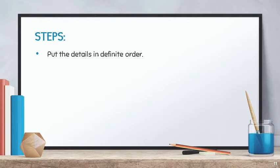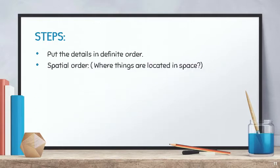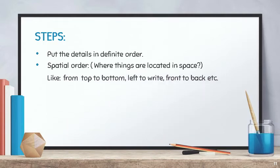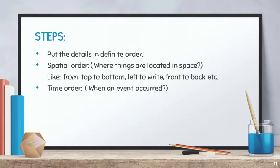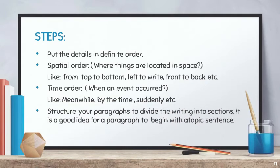Put the details in a definite order. Spatial order — where things are located in space, like from top to bottom, left to right, front to back, etc. Time order — when an event occurred, like meanwhile, by the time, suddenly, etc.